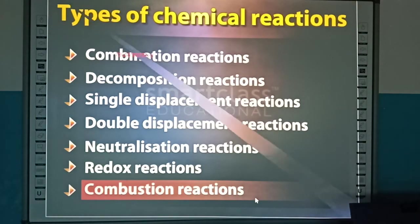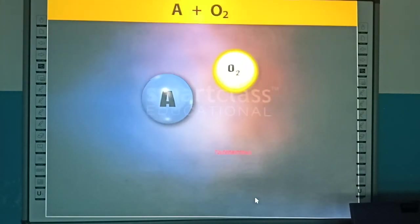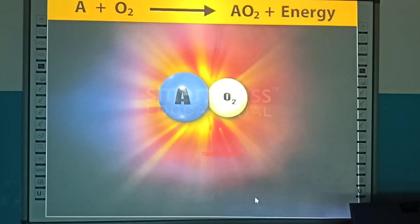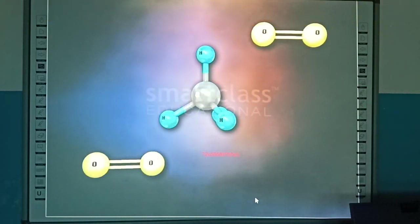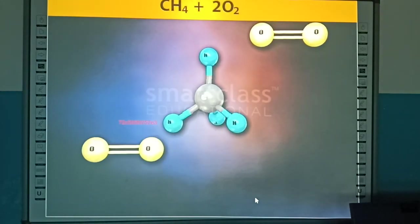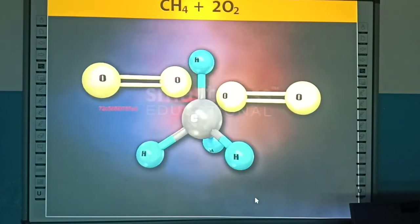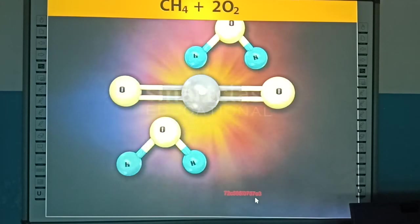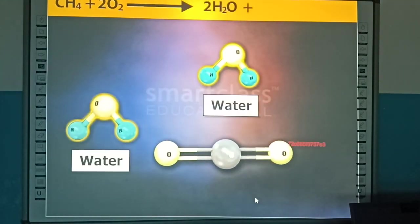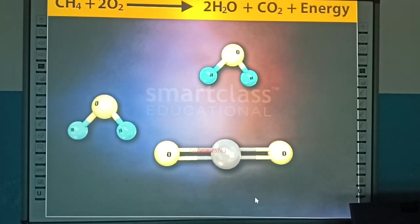Combustion reactions are chemical reactions in which a substance combines with oxygen to form one or more oxides along with a large amount of energy. For example, methane combines with oxygen to form water and carbon dioxide along with a large amount of energy.